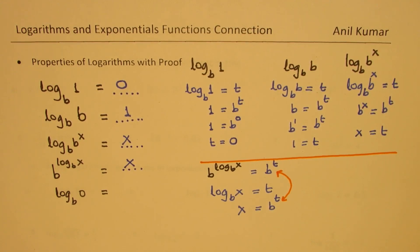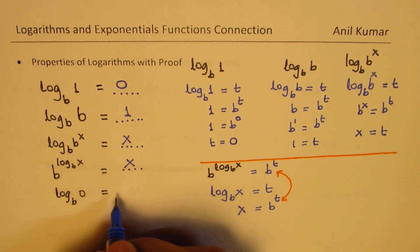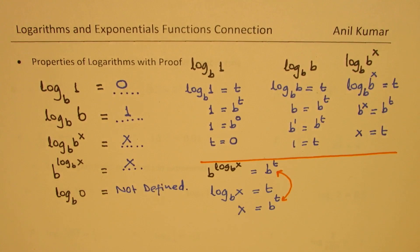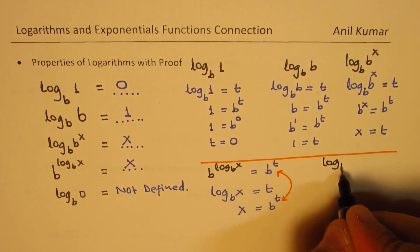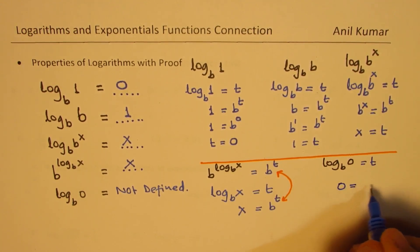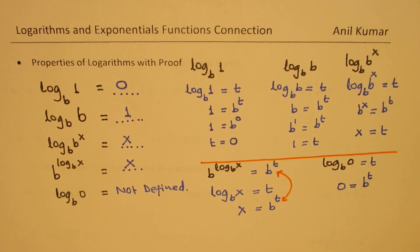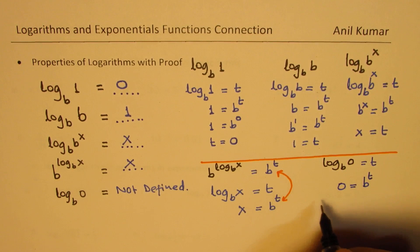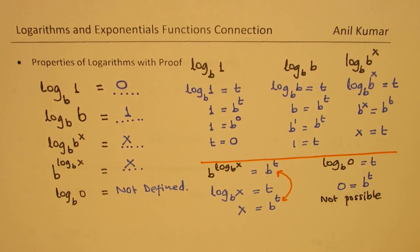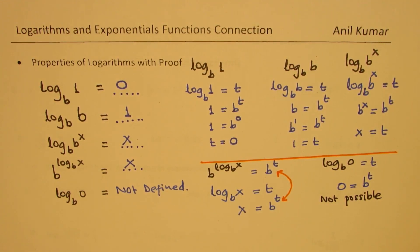Now the last one: log to the base b of 0. This is not defined. If we let it be t, then 0 equals b to the power of t. But exponential functions are always greater than 0 — their range is greater than 0, they are never 0, it is a horizontal asymptote for them. Therefore, log to the base b of 0 is not defined.